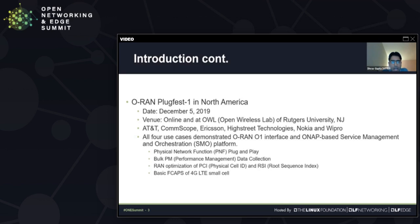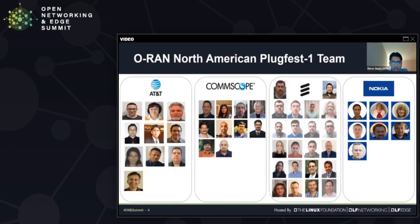The demonstrations were conducted by various companies including AT&T, Comscope, Ericsson, High Street Technologies, Nokia, and Wipro. The companies demonstrated four use cases related to the ORAN O1 interface and an ONAP-based service management and orchestration platform, or SMO. The use cases focused on demonstrating the physical network function or PNF plug-and-play, bulk performance management data collection, RAN optimization use cases related to PCI and RSI optimization, and basic FCAPS of 4G LTE small cells.